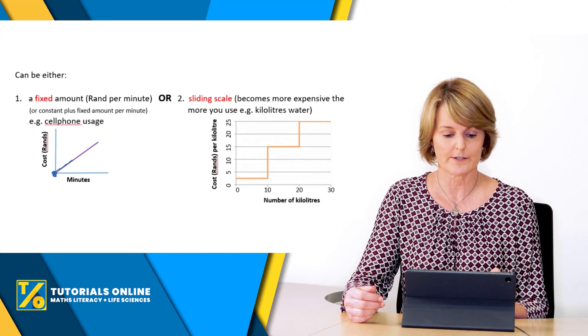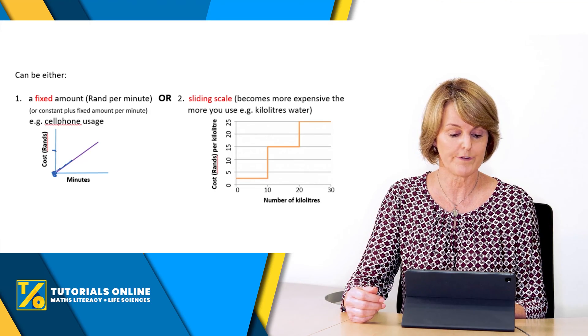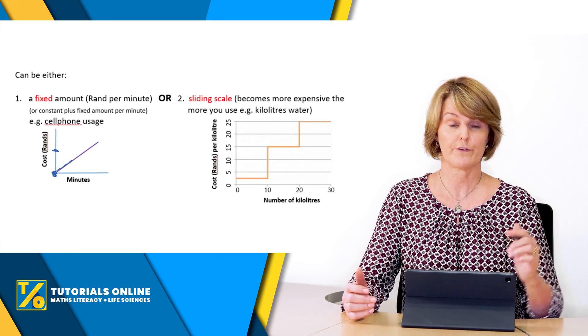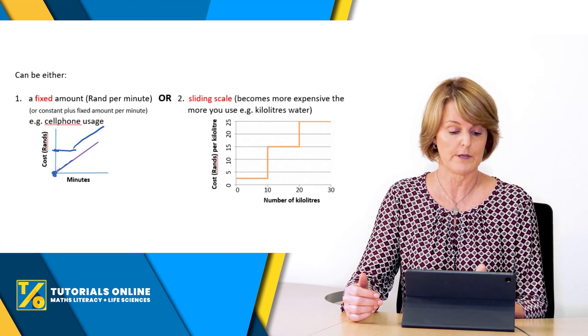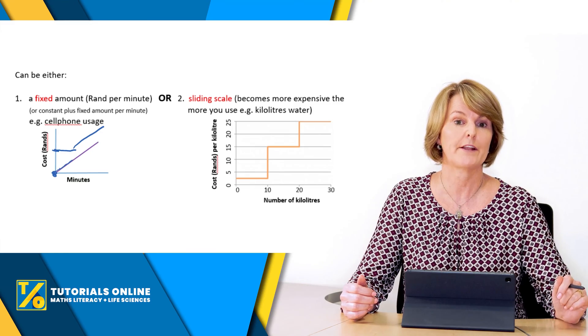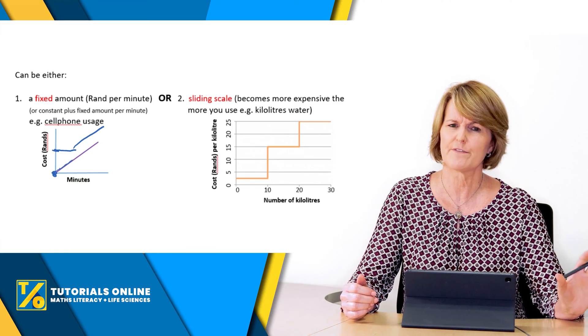If you've got a contract, then you might be paying 250 rand just for the first 50 minutes, and then it'll be flat and then it'll have a line that's slanting like that, but that's a different video.